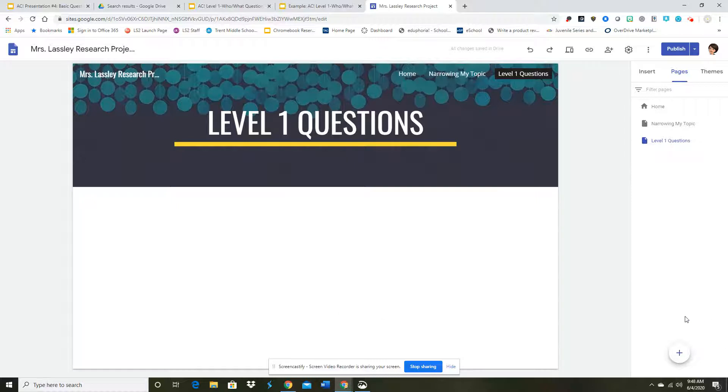Now how to do that is do not use this down here because that'll just create another page. I'm actually going to hover on top of level one questions and what I call the hamburger button, the three dots in a row, comes up. I'm going to click on it and it's going to give me different options here. And I am going to add a sub page. Now when I add that sub page, I'm going to put who slash what question.